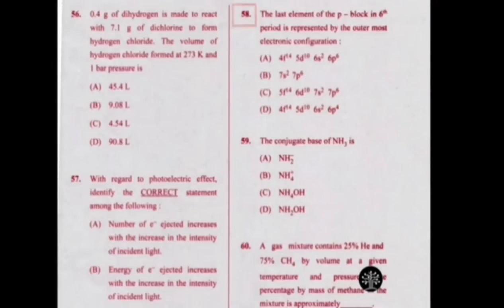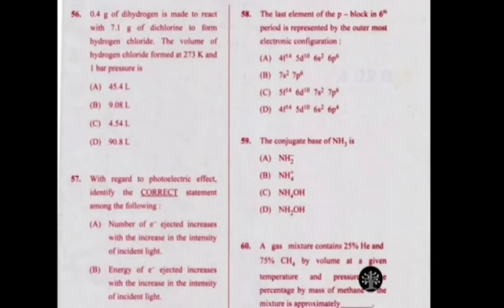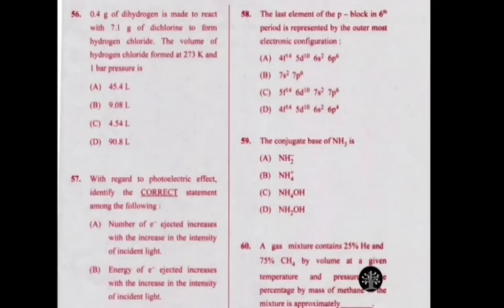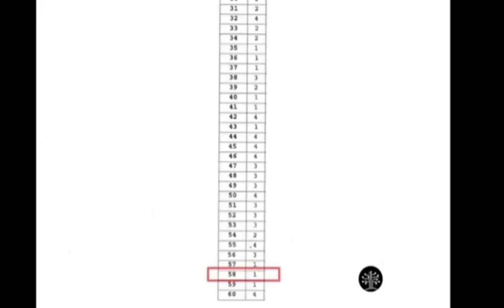For question number 58, option A and option D are both similar, sharing a similar start — 4F14, 5D10, and 6S2 — in both option A and option D. To decide the correct option among A and D, we take the help of other options. Option A ends with 6P6. The probability of P power 6 appearing more supports option A. Therefore the correct option will be option A. You can verify your answer — question number 58 is option 1, meaning option A.